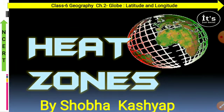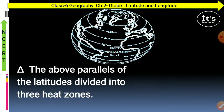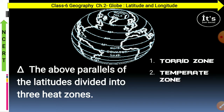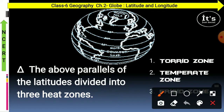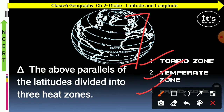The latitudes of the earth divide into three heat zones. The first is the torrid zone, the second one is the temperate zone, and the third is the frigid zone. So overall there are three types of heat zones: torrid, temperate, and frigid.